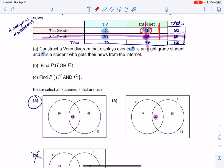And that's why you see 49 is here in the internet circle, but it's not included in the 8th grade circle because those are not 8th graders. These 49 folks, they're literally 7th graders that get their info from the internet. So that's where that 49 is on the table. It was on the table, and there it is on the Venn.